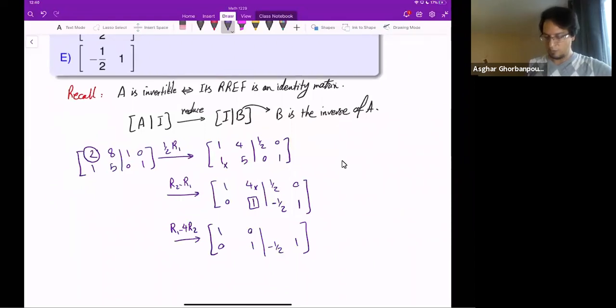And then negative 1/2 times negative 4 is 2, and then added to 1/2, this will be 5/2, negative 4.